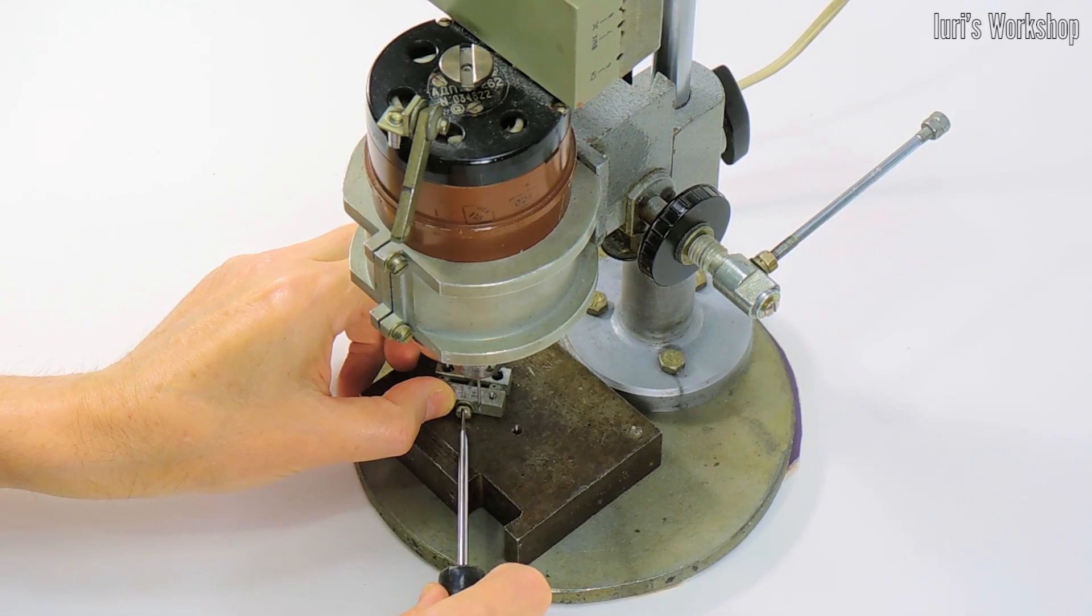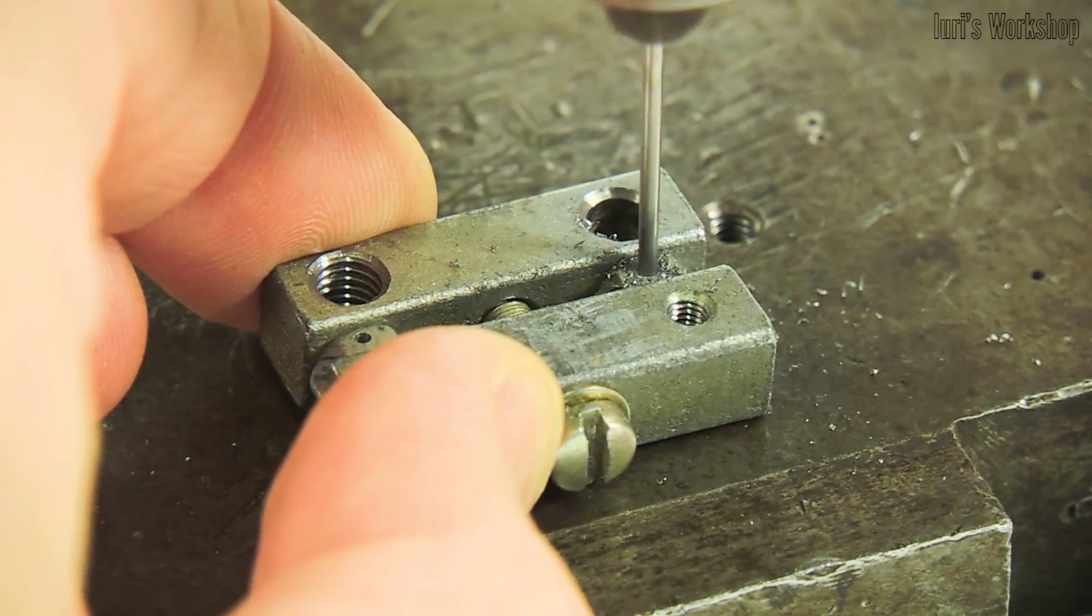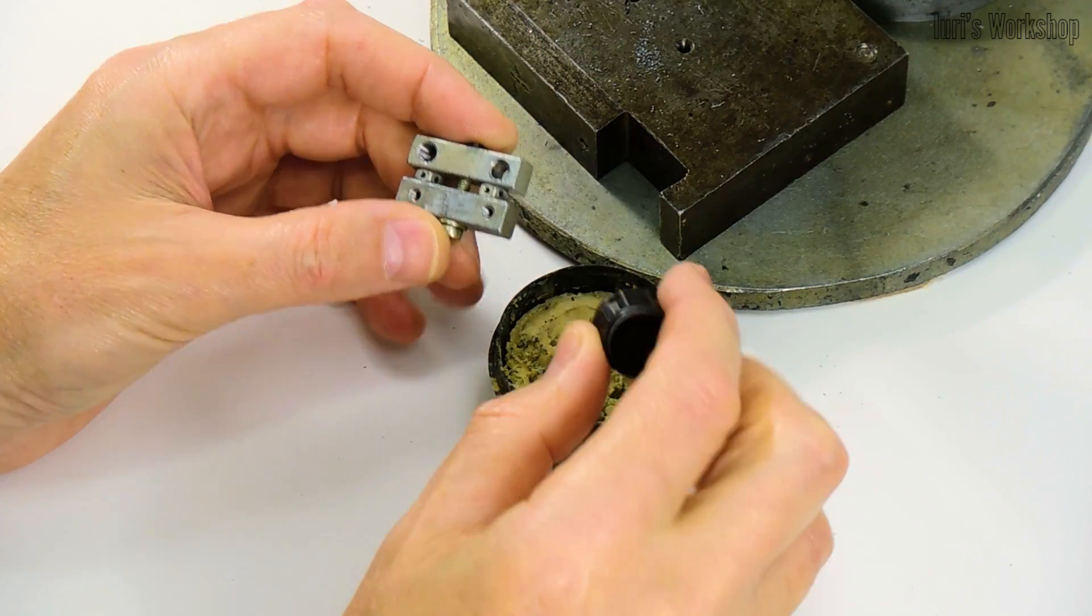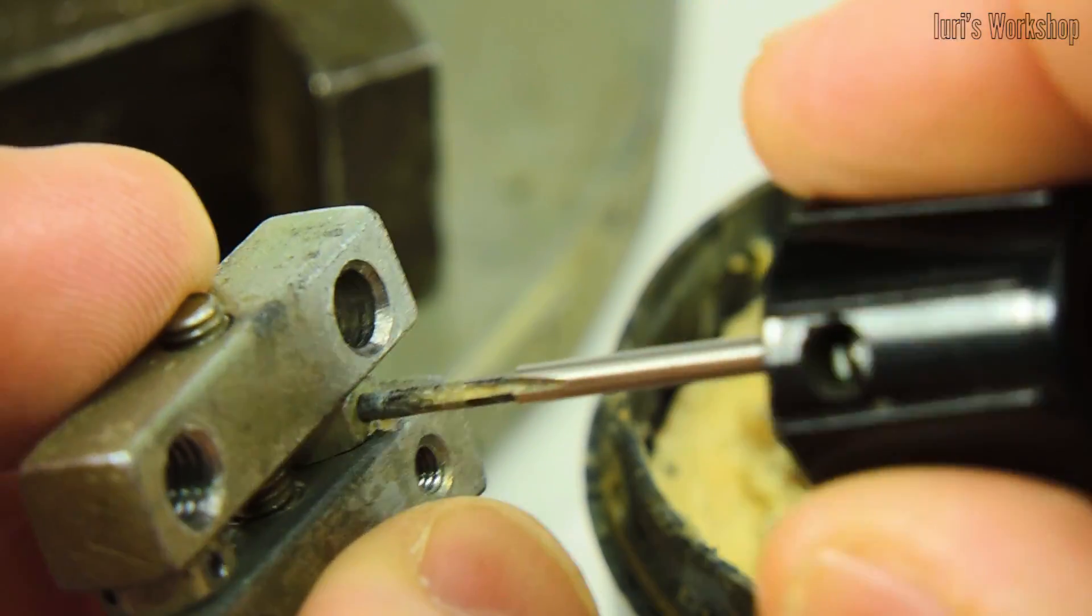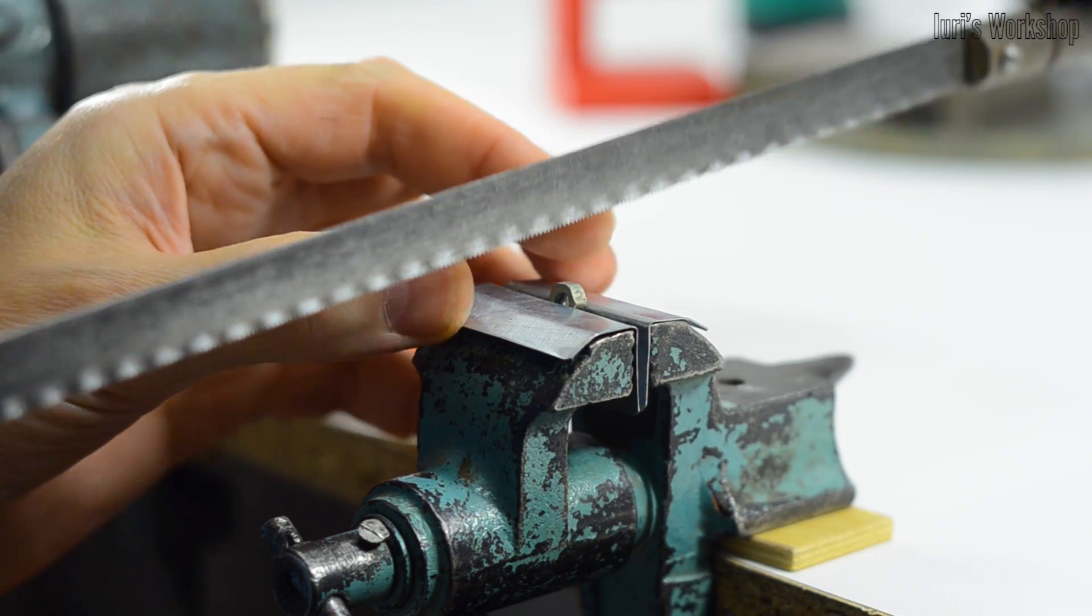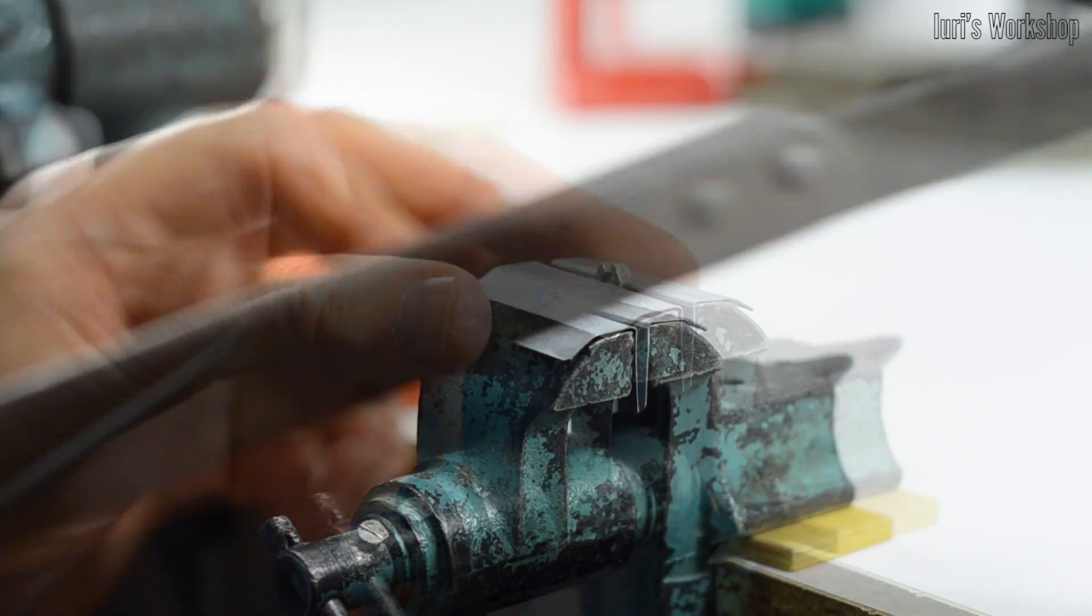To hold the nuts while drilling and threading, I used an improvised vise like this. I used regular soap to lubricate the thread tap. In one of the nuts, you need to make a groove for the heater leads.